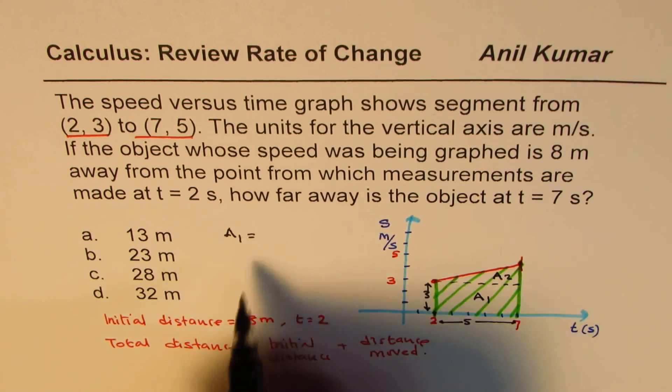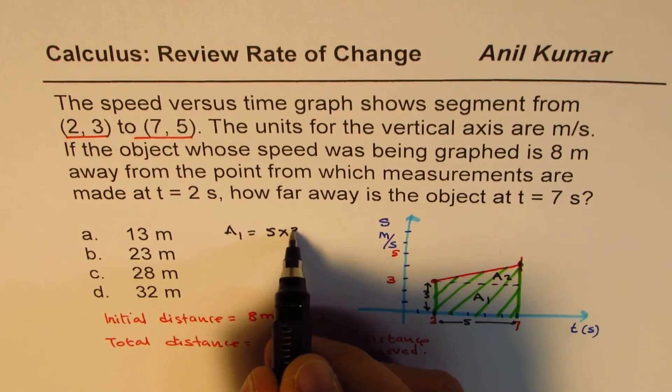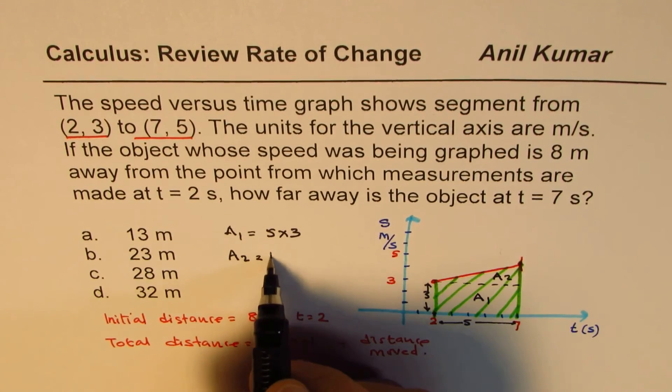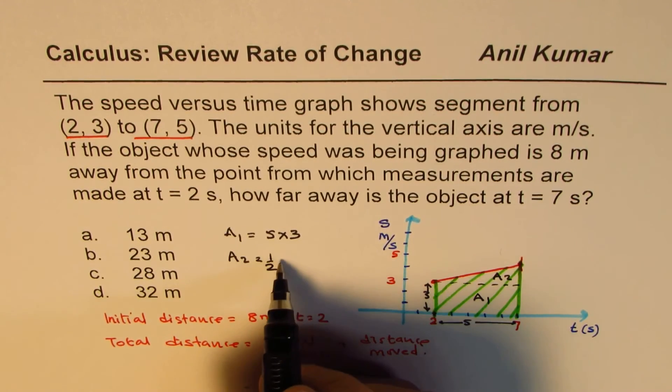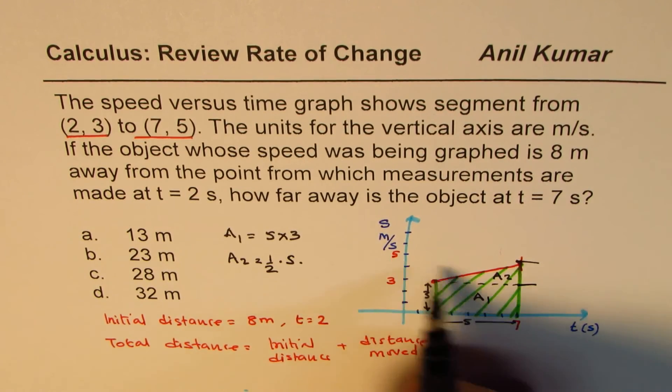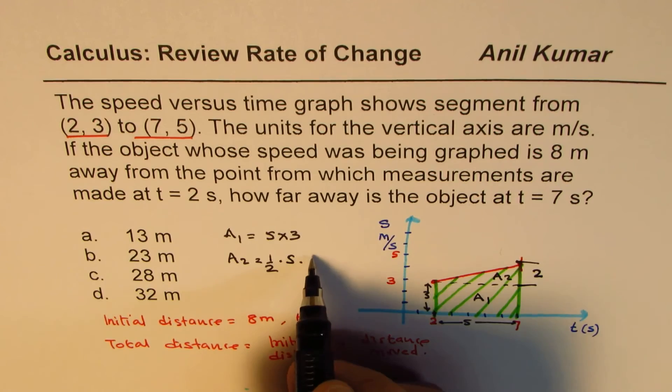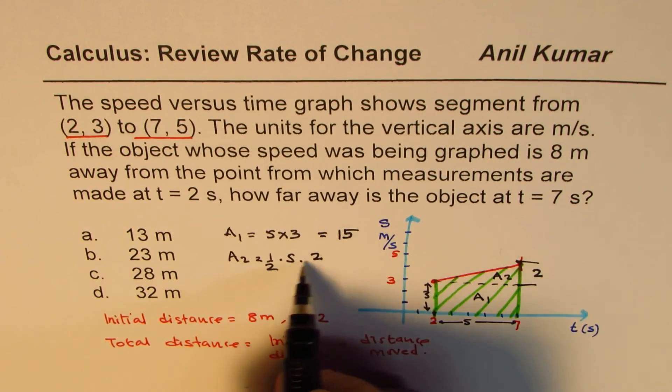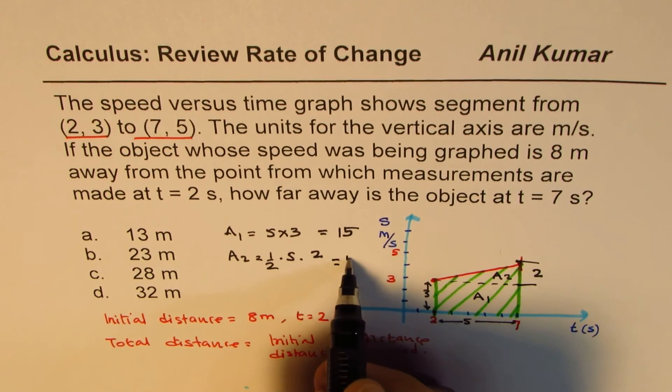So 5 into 3. A2, the area of the triangle, is half of base which is 5 times height. This height is 3 to 5, it is 2 units, times 2. So 5 into 3 is 15 and half of 5 times 2 is 5.